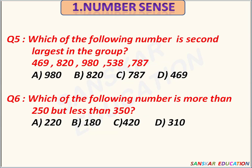Which of the following numbers is second largest in the group? Numbers are 469, 820, 980, 538, 787. Options are given. The second largest number is 820. Option B is the correct answer.